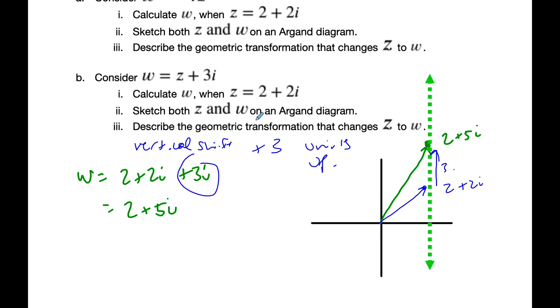And so this here is a vertical shift of positive 3 units up. And so now we can, when we are working with complex numbers, there are geometric transformations that correspond to both.